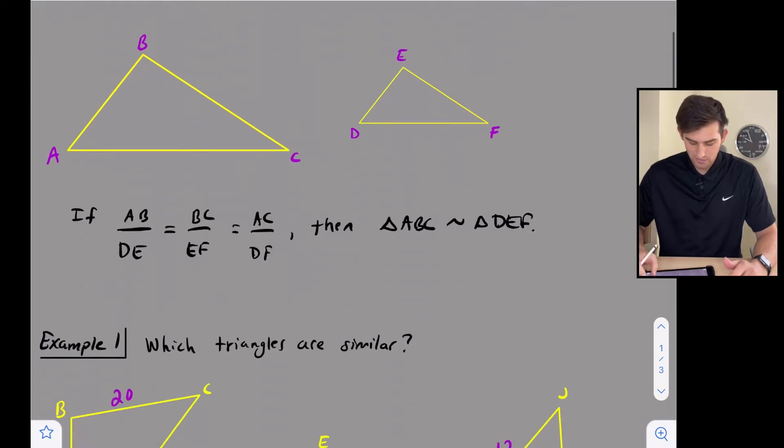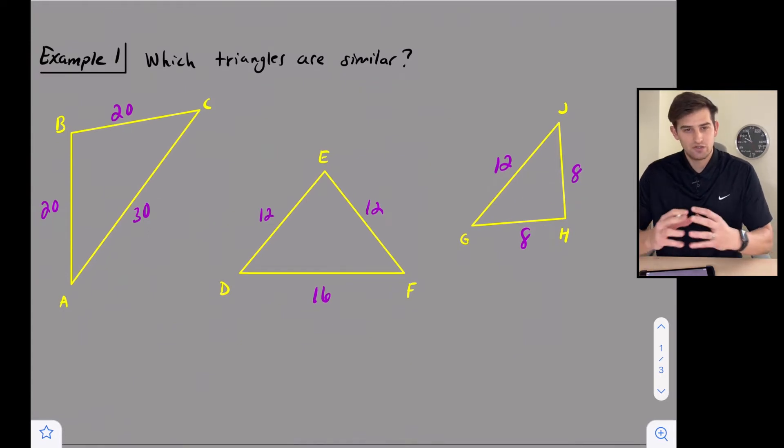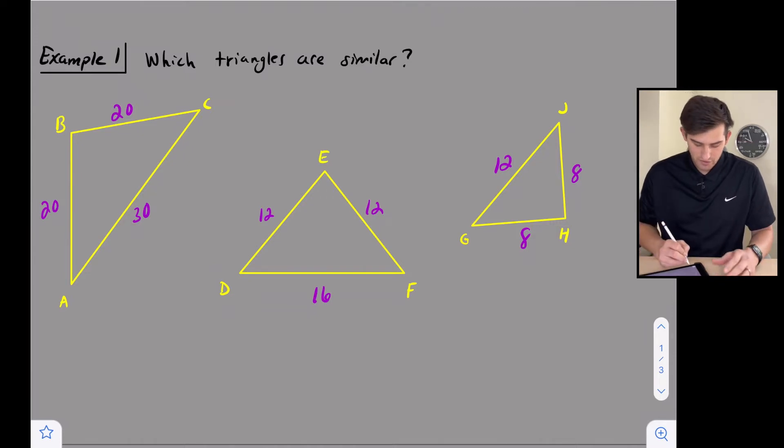Let's look at some examples to go along with this theorem. Example number one just says which triangles are similar. So there's a strategy to this: we want to take our shortest sides and compare them first, our longest sides and compare them, and then if we have any remaining sides we can also compare them. In this case notice we have on triangle ABC two sides are 20, on triangle DEF two sides are 12, and on triangle GHJ two sides are 8. So let's start with our longest sides and let's compare them. For triangle ABC, let's compare AC over DF.